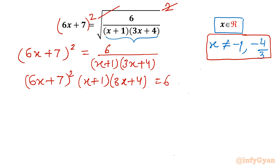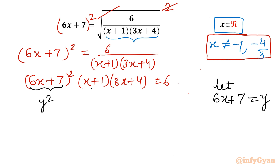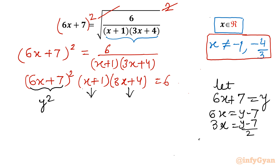Now I will use substitution. Let 6x plus 7 equal y. So 6x equals y minus 7, and 3x equals (y minus 7) over 2. Adding 4 to both sides: 3x plus 4 equals (y minus 7)/2 plus 4, which equals (y plus 1) over 2.